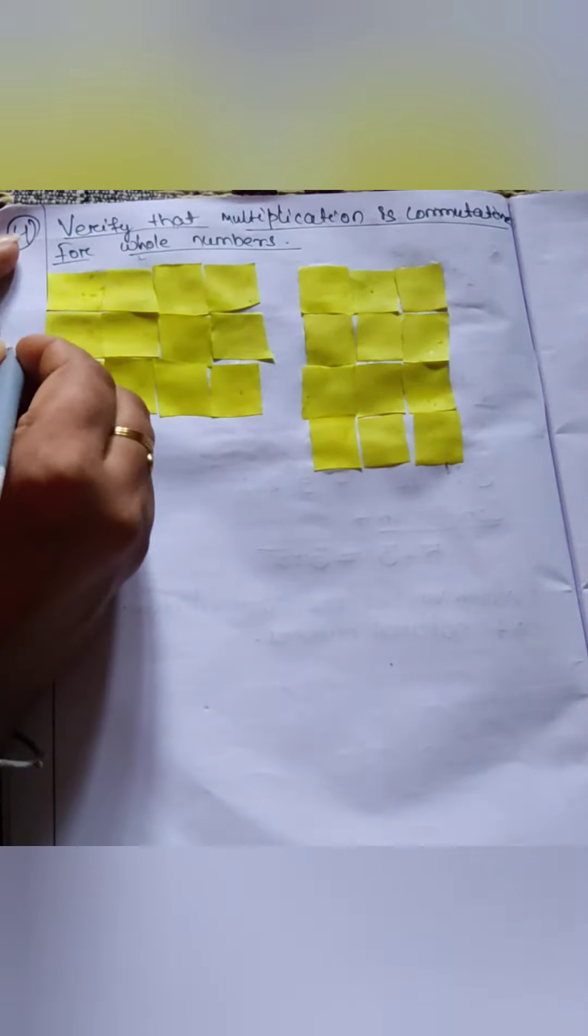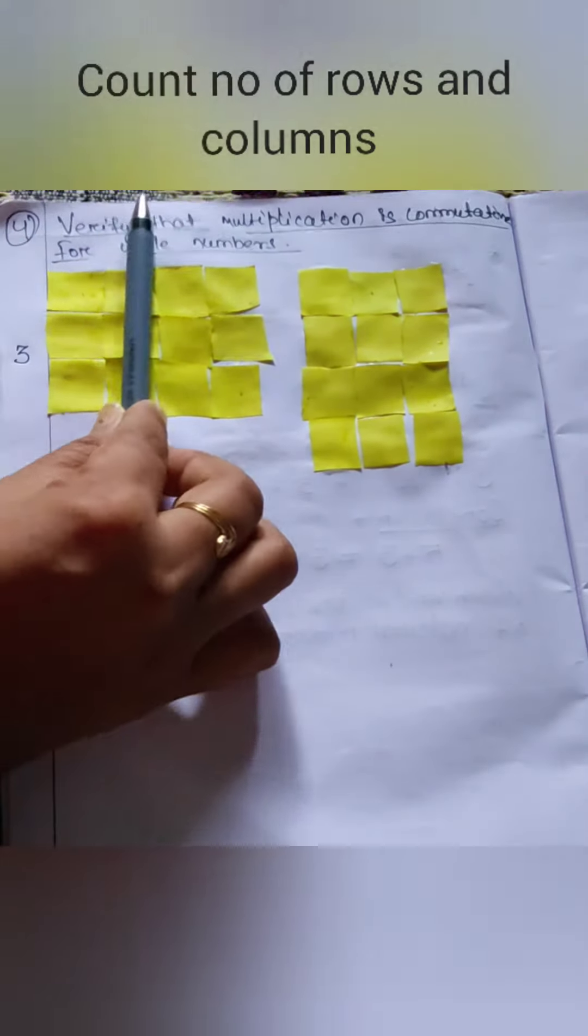So here in this case, you can see that in the first arrangement there are three rows, and in the second arrangement there are four rows. In the first arrangement there are four columns, whereas in the second arrangement there are three columns.